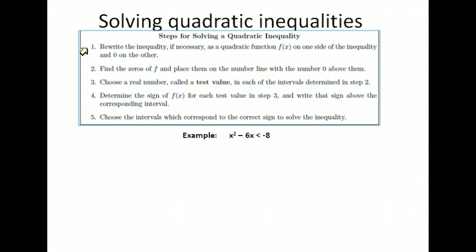So step one: I need zero on one side, everything else on the other. For this example, I'm going to add 8 to both sides so that I have zero on one side of the inequality and everything else on the other.